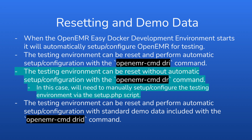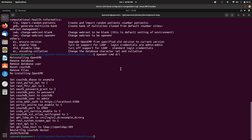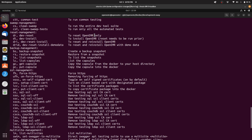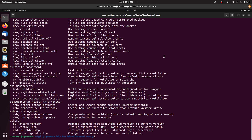The next command allows you to reset the testing environment but not perform the automatic setup and configuration. In this case, you need to manually set up and configure the testing environment via the setup.php script, which is something necessary for developers who want to develop on the installation script. So we'll go back to the command line and type OpenEMR-CMD to show the available commands. The command we're going to use is the DR command, which resets OpenEMR only without an automatic reinstall.